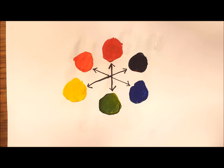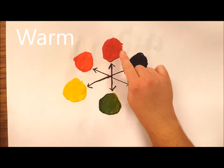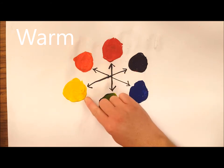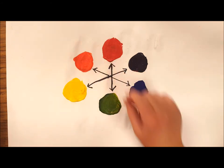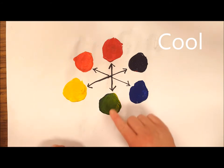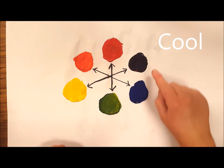There are also colors called warm and cool colors. Warm colors are warm like the sun and fire. Those are yellow, orange, and red. Cool colors are cool like trees and water and ice.